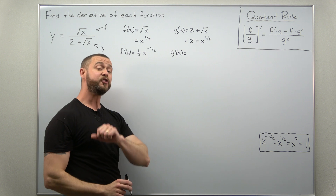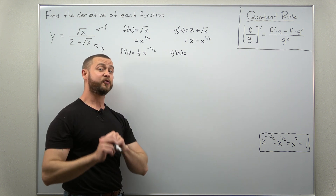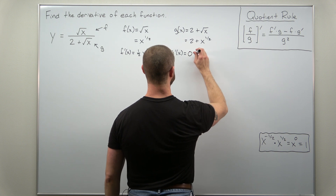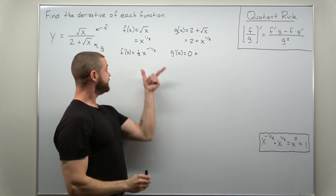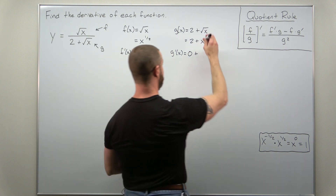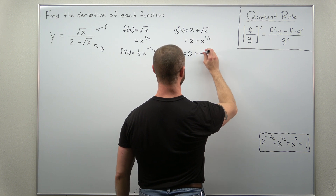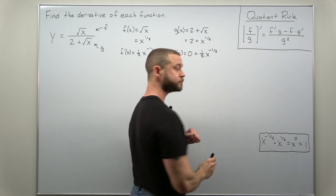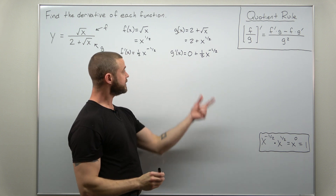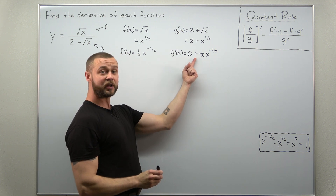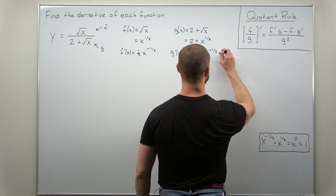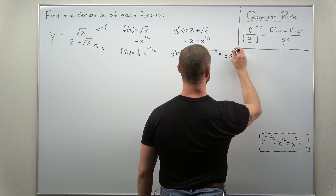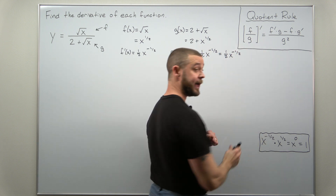The only difference is we have that first term 2, which is being added to the square root of x term, and 2 is a constant. The derivative of any constant is zero. So for g prime we get zero, and then the same power rule calculation: bring your power one-half down times x to the negative one-half. You can simplify that as one-half times x to the negative one-half power.